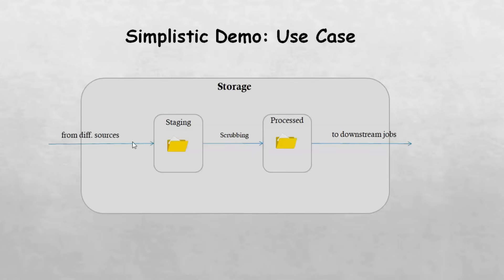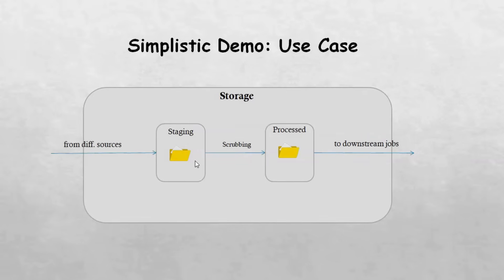We have a staging layer where we receive raw files as generated by the source system on a daily and hourly basis. Once the files are received in the staging area, we need to do some processing or data scrubbing and move the data to the processing location. From the processed location, the downstream jobs will pick up these files. This is a simple use case which we will try to build in Apache NiFi.